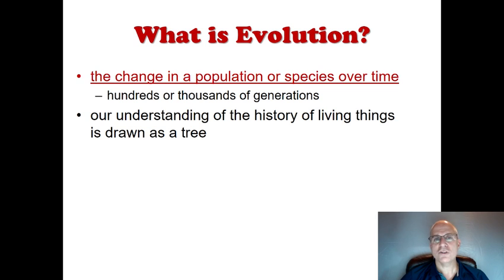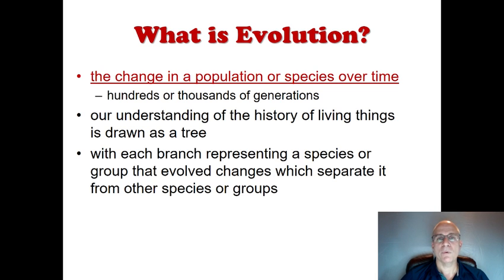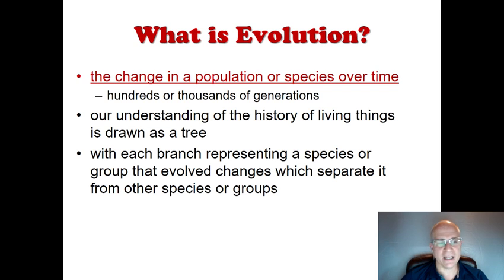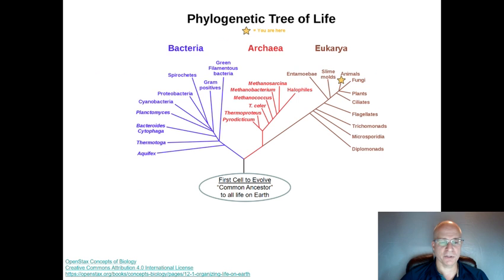Our understanding of the history of living things and how they've changed over time is pretty accurately drawn as a tree, with each branch of the tree representing a species or, depending on the size of our branching tree — what we call a phylogenetic tree — each branch is going to represent a species or another group separate from the other species or groups.